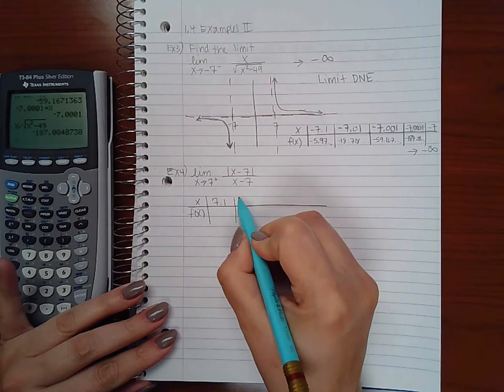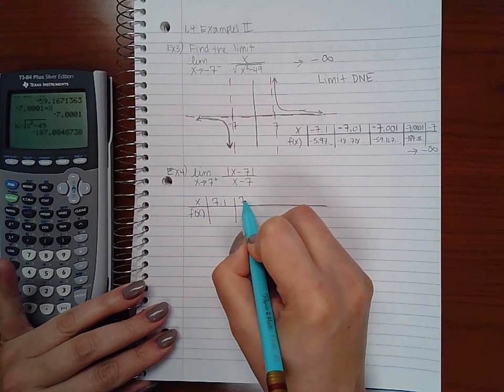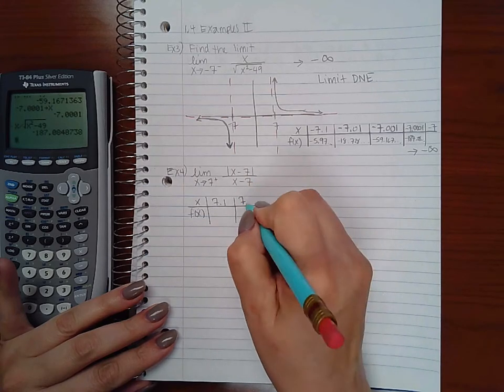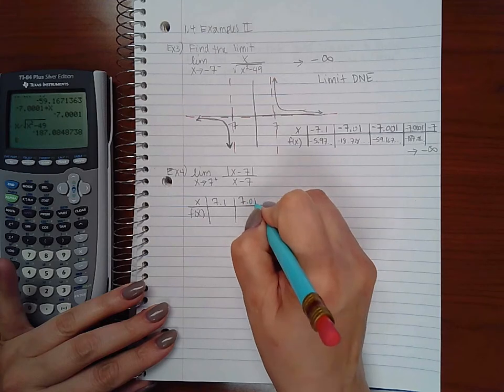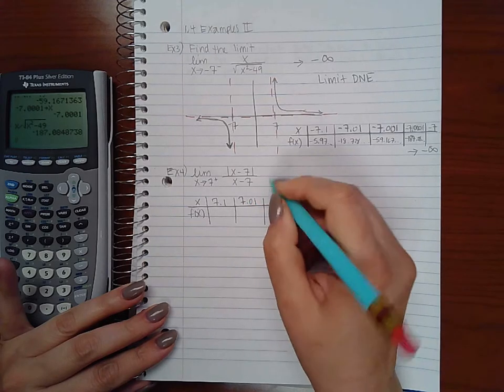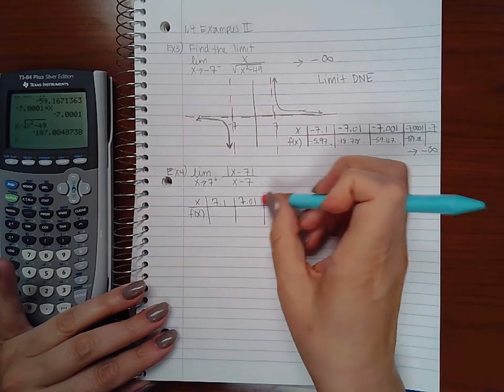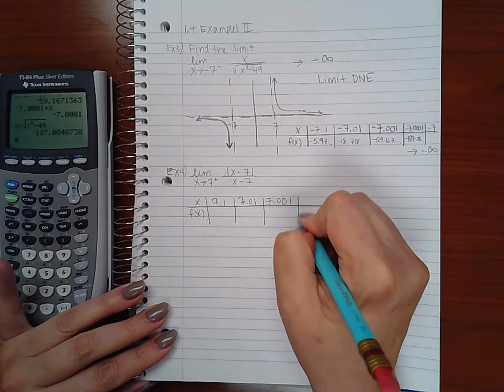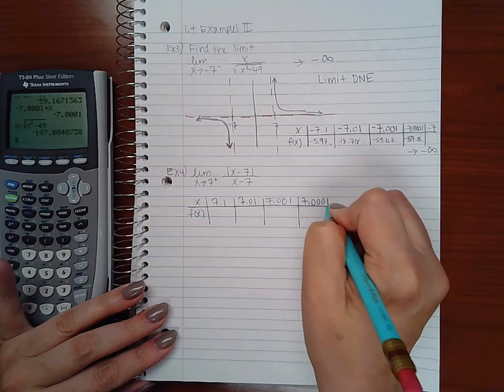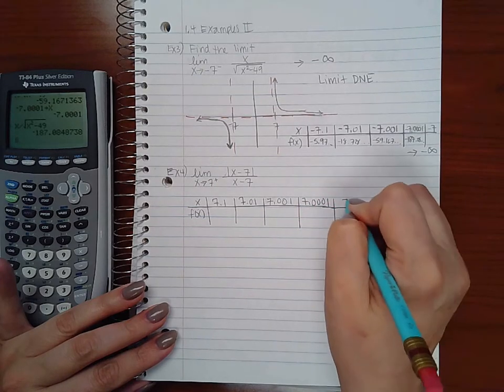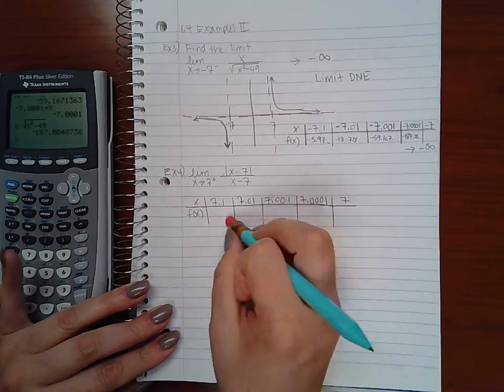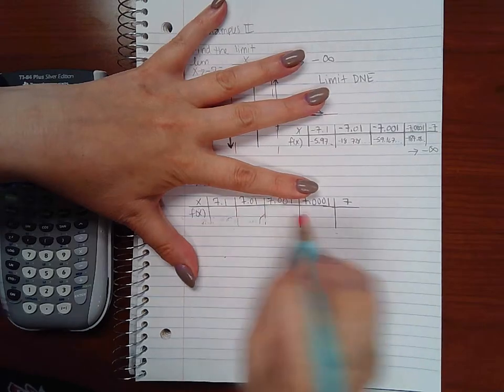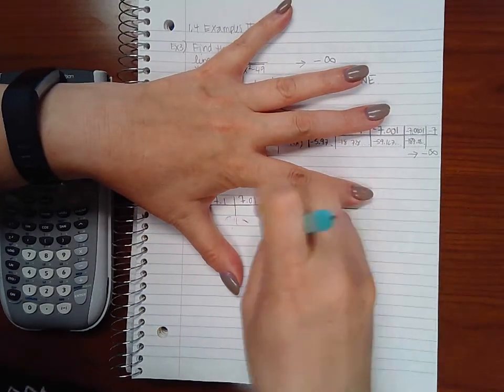7.001, and so on and so forth until I got to positive 7. Just trying to level out my little graph paper here.